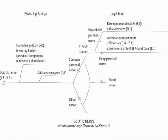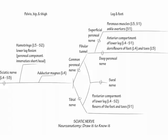Now let's draw the tibial nerve. Show it passing through the lower leg. Indicate it innervates the posterior compartment lower leg muscles, which L4 to S2 supplies. They are the gastrocnemius, soleus, tibialis posterior, and toe flexors. Flexor digitorum brevis is innervated by the more distal medial plantar branch.